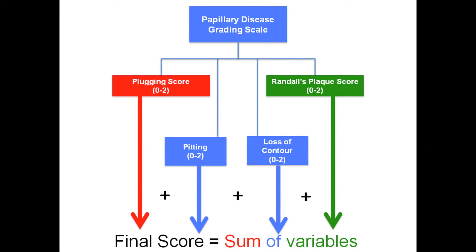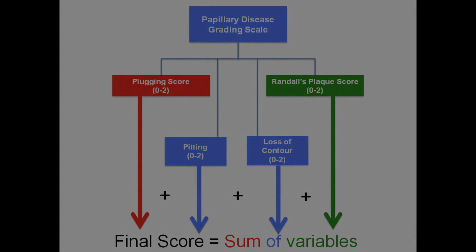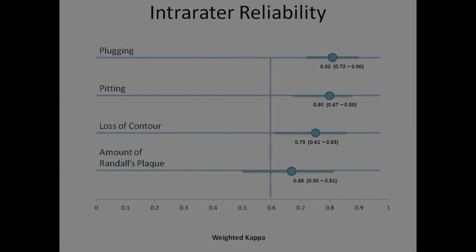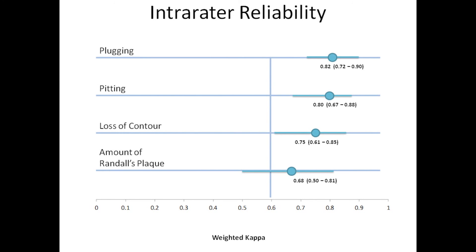Reproducibility of scoring using this grading scale was assessed among four separate urologists viewing 50 clips from unique patients on two occasions each. Prior to scoring, each urologist underwent a 30-minute training session where separate reference examples were viewed together with experts and discussed in an open forum. All papillary clips were then graded independently in a randomized order and in repetition to assess both intra- and inter-rater reliability. For all four domains, weighted kappa was greater than 0.6, indicating substantial agreement for intra-rater reliability.